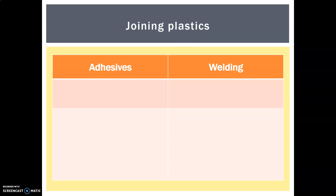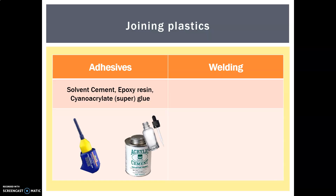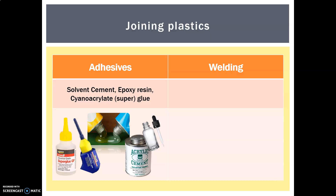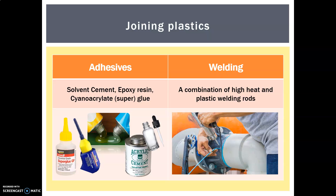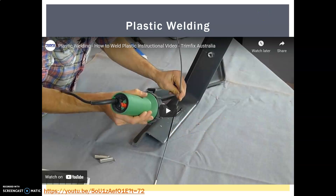There are a few ways of joining plastics together. In school we tend to use adhesives — solvent cement (also known as acrylic cement), epoxy resin (a two-part resin that goes off hard), and cyanoacrylate, also known as super glue. The commercial process tends to be plastic welding — a combination of high heat and plastic welding rods rather than metal ones.